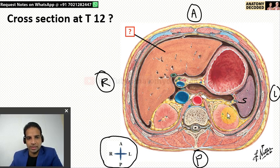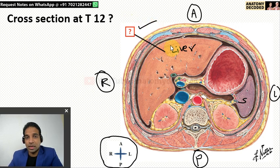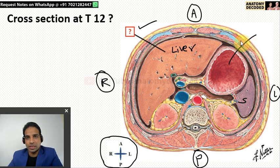What all structures can we appreciate in this image? On the right side, the large organ which is visible is the liver. Nowadays in post-graduate examinations, image-based questions are asked. At times in cross sections, any structure can be labelled and asked in multiple choice questions. That is why sectional anatomy is also very important.